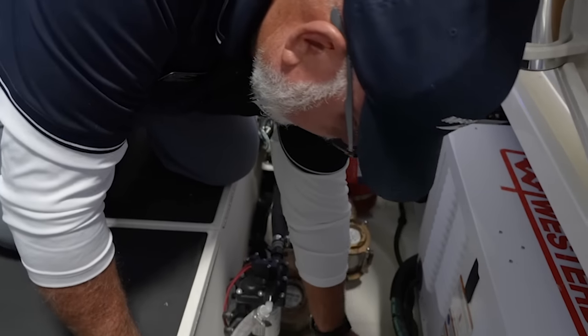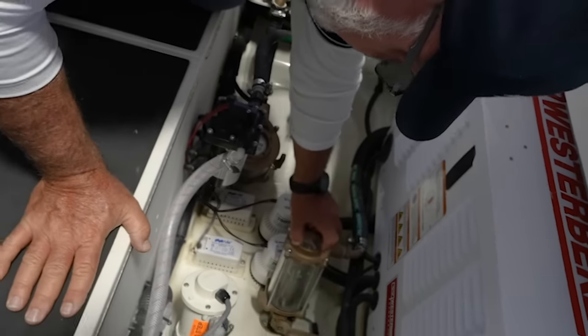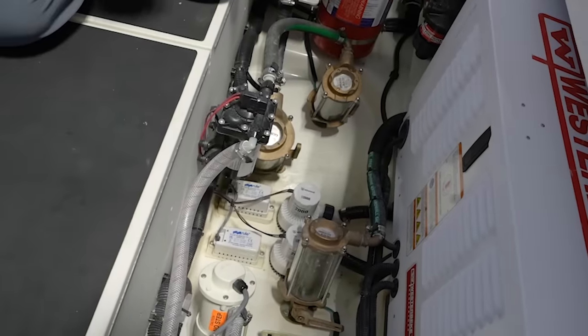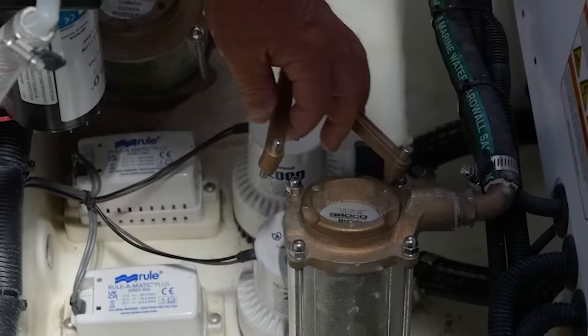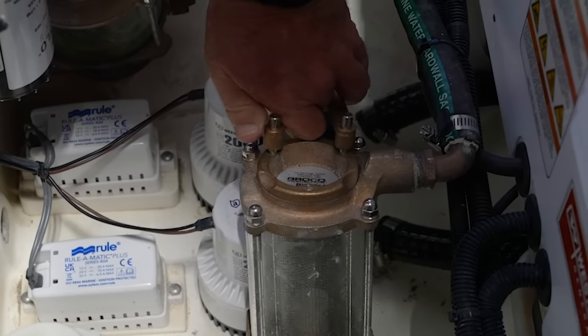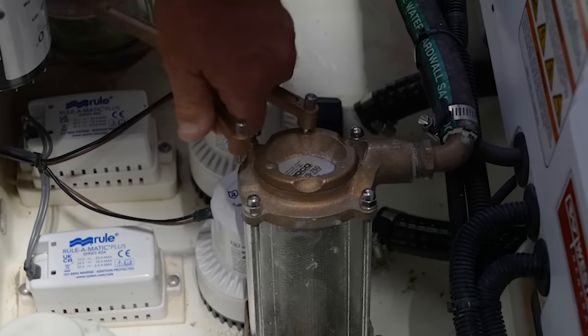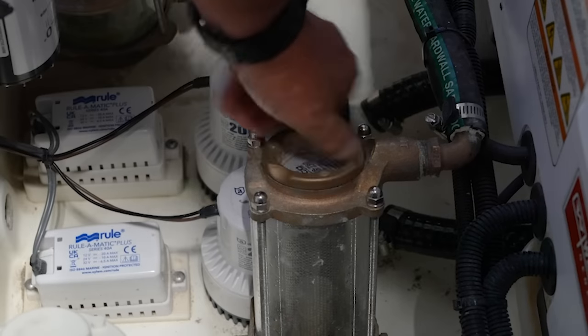Then you've got a lid on the top. You want to unscrew this lid and if it's tight like that. So this is just a little pin wrench and there's some dimples on here that I can put in there and it gives me a little extra torque to be able to loosen that up.